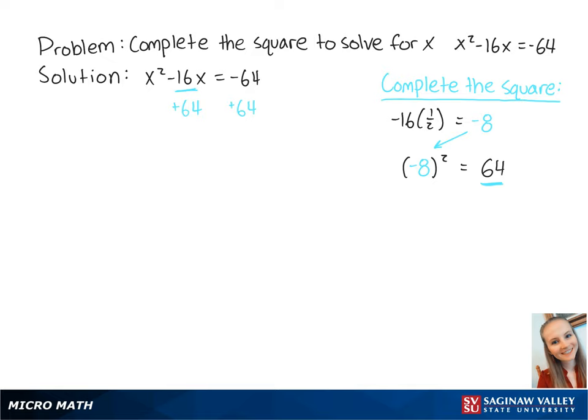Now we add 64 to both sides of the equation to get x squared minus 16x plus 64 equals 0. Now we can complete the square to get x minus 8 squared equals 0.